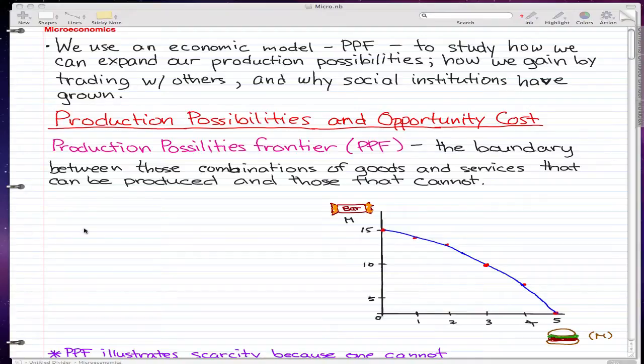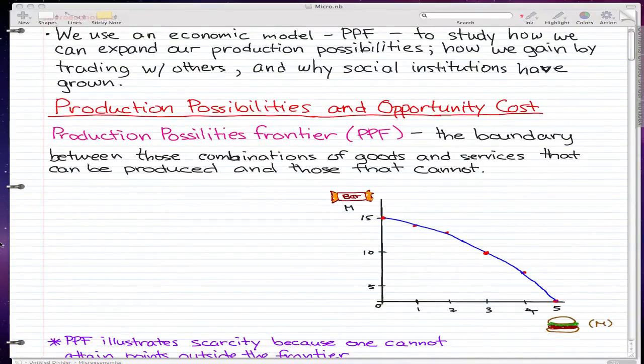The production possibilities frontier, or PPF, is the boundary between those combinations of goods and services that can be produced and those that cannot. To illustrate the PPF, we'll focus on two goods at a time and hold everything else constant. In our economic model, we'll focus on the energy bar and hamburger. Only these two things will change; everything else will remain constant.